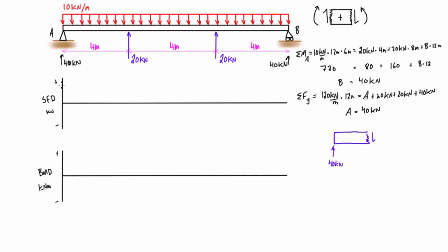We start out at positive 40. Now let's do our free body diagram extended just to the left of the first point load. We include four meters of the distributed load — 4 times 10 is 40 kilonewtons pressing down. So the shear force just to the left of this point load is 40 up and 40 down, which equals zero.